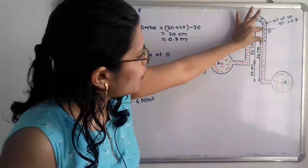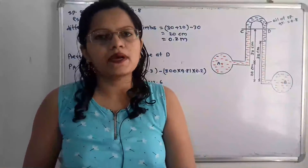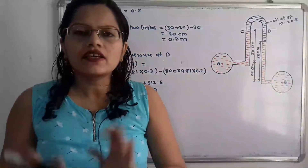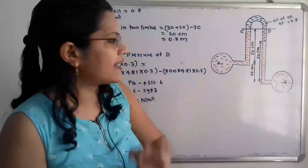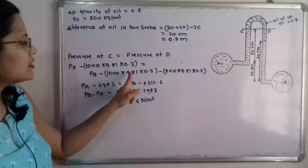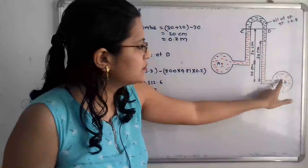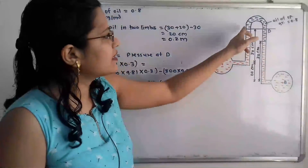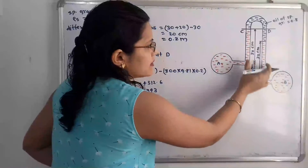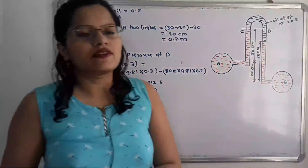For the pressure below point D, there are two liquids — oil and water. We take the pressure at point B, that is P_B, then subtract ρgh for the water in the right-hand side limb. The height of that water is 30 cm = 0.3 meters, with density 1000 and g = 9.81. So we subtract 1000 × 9.81 × 0.3 from P_B. Note that the oil in the inverted U-tube manometer is the light liquid compared to the two pipe liquids.